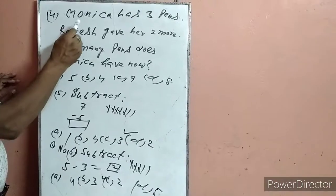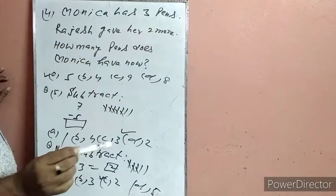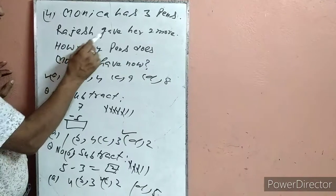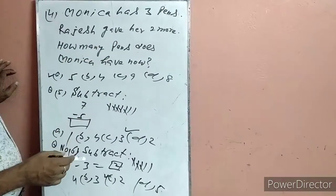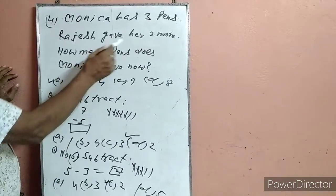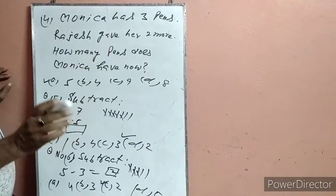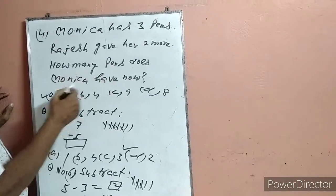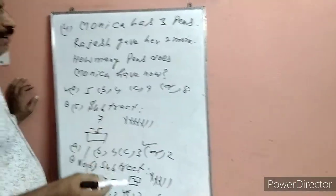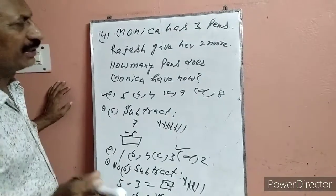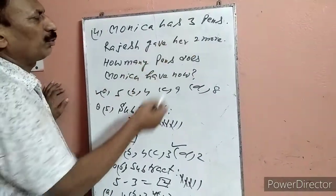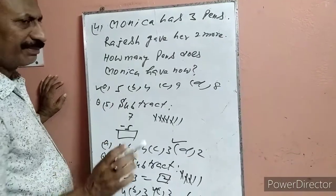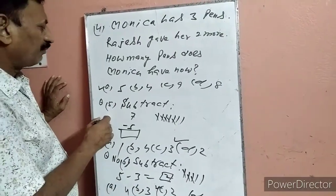Question 4: Monika has 3 pens. Rajesh gave her 2 more. How many pens does Monika have now? Monika के पास पहले 3 कलम थे, Rajesh ने उसको 2 और कलम दे दिए. 3 में 2 add कर देंगे — 5. 5 कहां पर है — वहां सही है. Next portion 5.